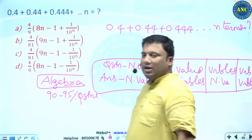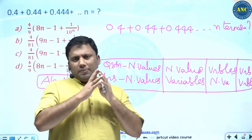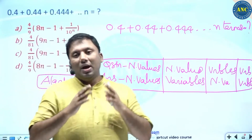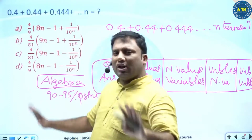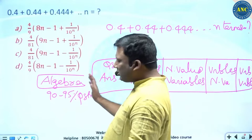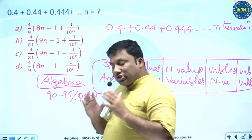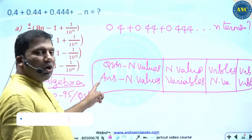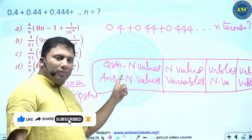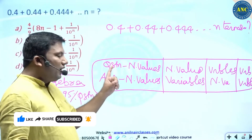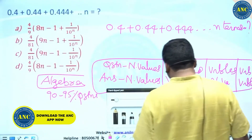Almost any question you see in algebra — right from linear equations, quadratic equations, polynomial equations, and progressions — will fall under these four categories. Some miscellaneous questions fall in the remaining 5 to 10 percent. Most algebra questions fit: numerical-numerical, numerical-variables, variables-numerical, or variables-variables.